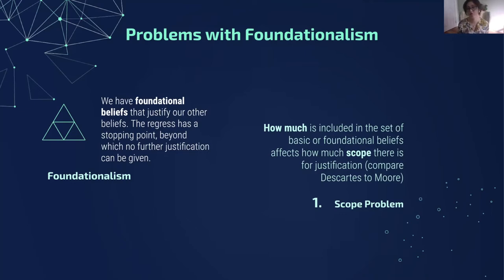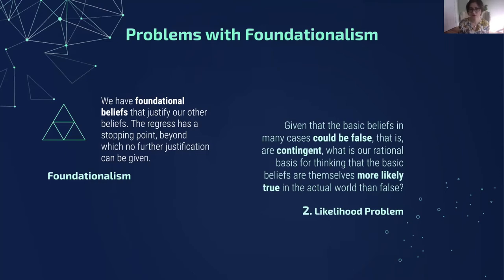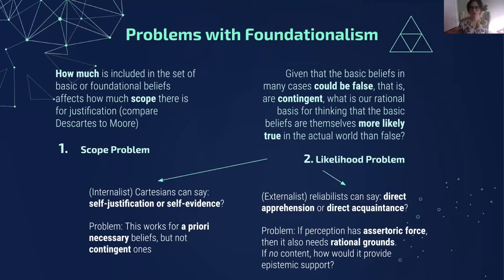Here's a second problem for foundationalism. Given that the basic beliefs in many cases could be false — that is, they are contingent — what is our rational basis for thinking that the more basic beliefs are themselves more likely true in the actual world than false? Here are a couple of responses to the likelihood problem. The internalist Cartesians can say that basic beliefs are self-justified or self-evident. One problem for this response is that it works for a priori necessary beliefs — things you have justification for from the armchair — but this doesn't work for contingent beliefs, which is what we were after initially.